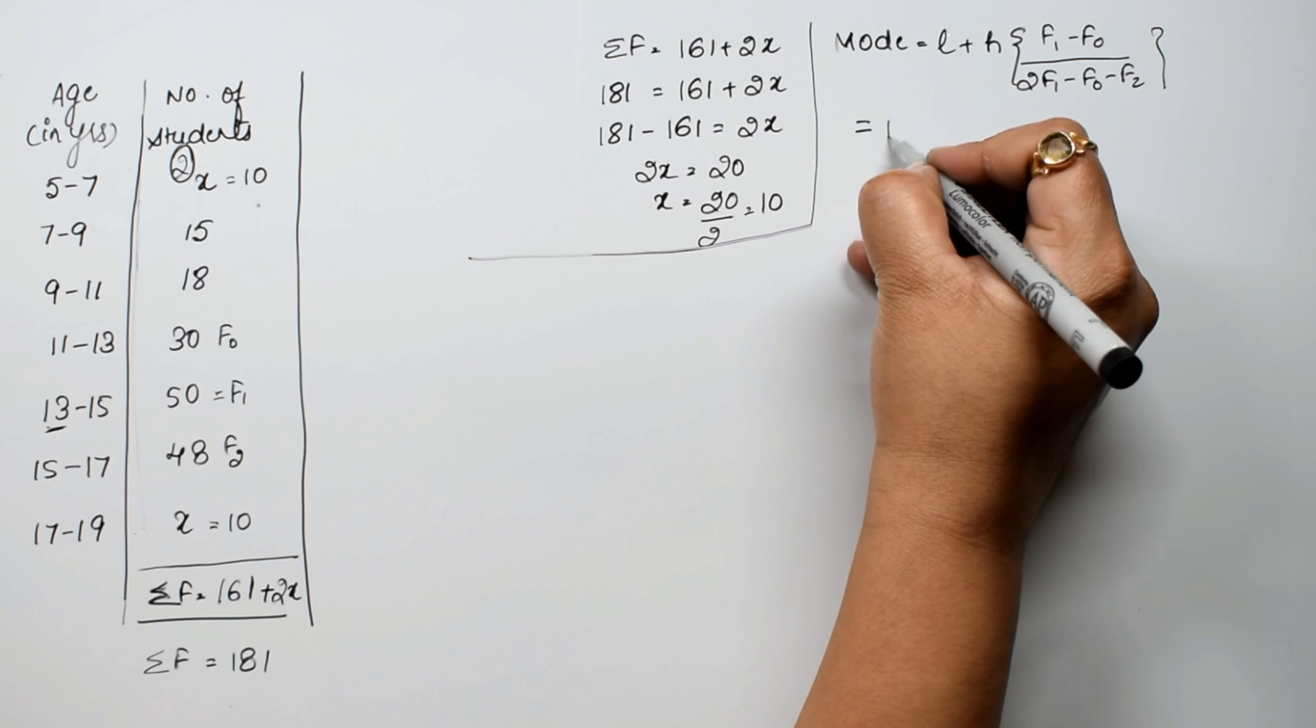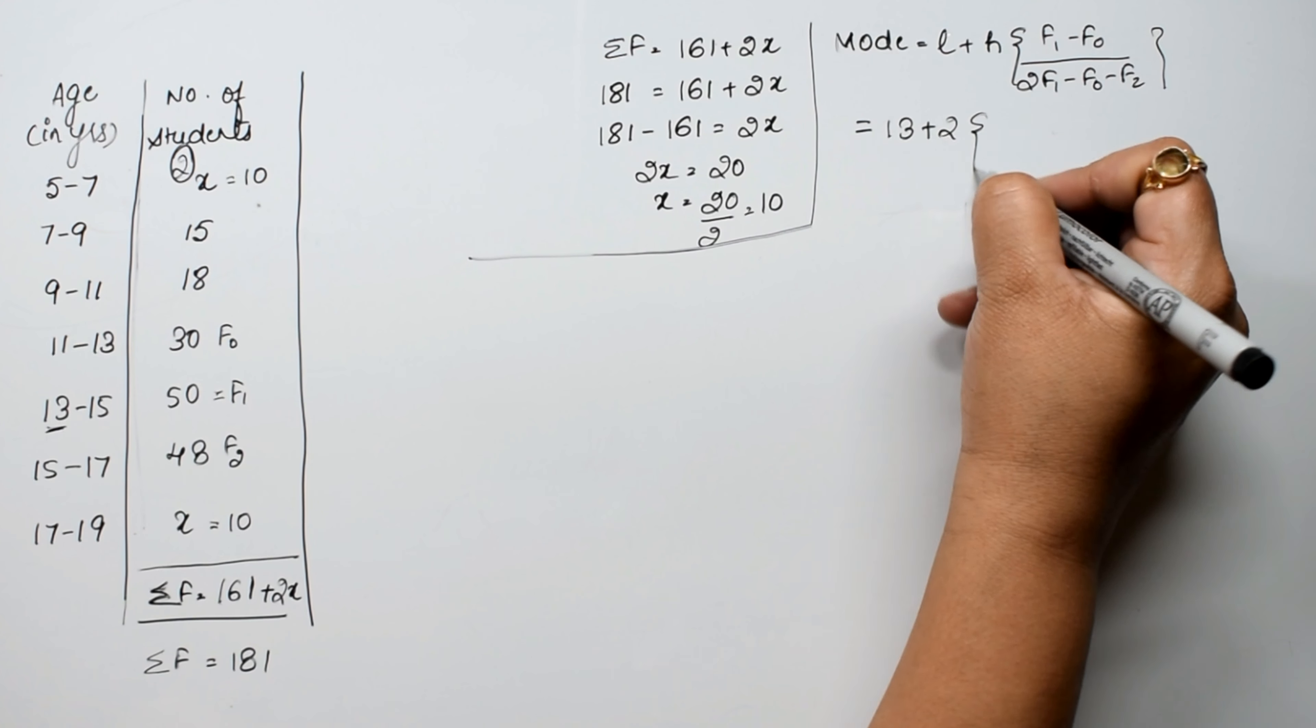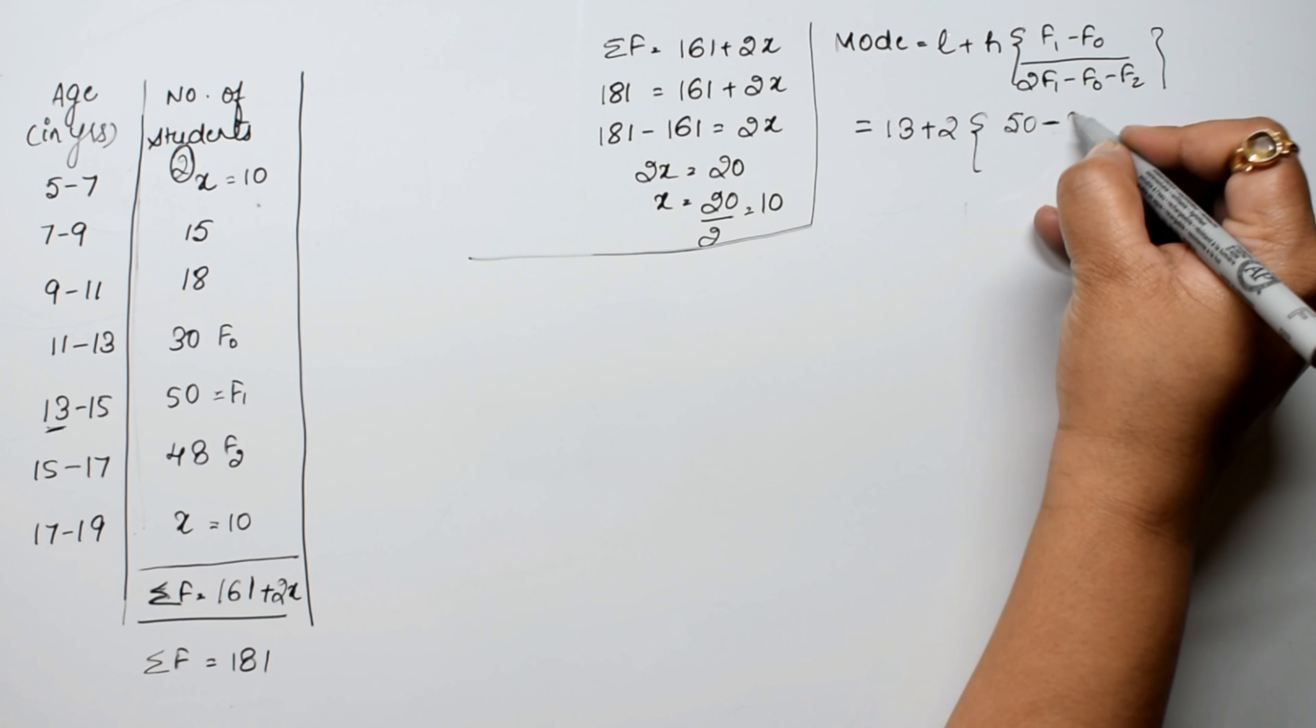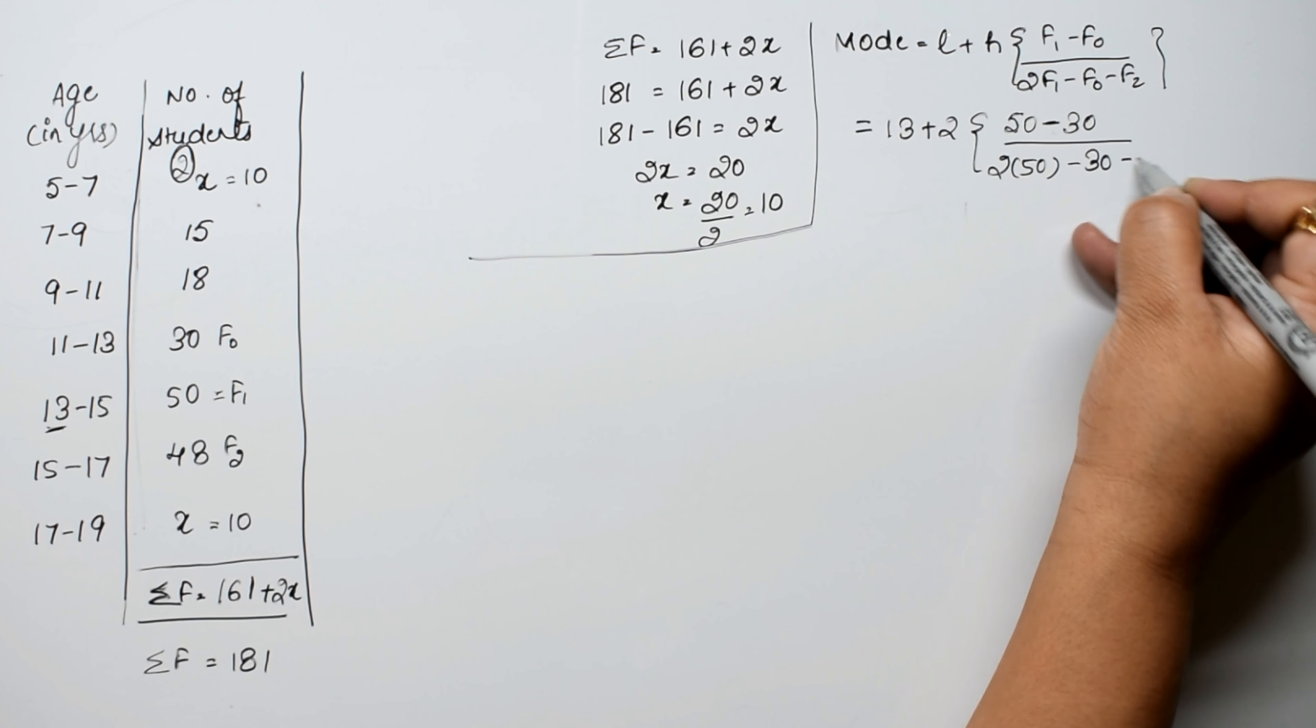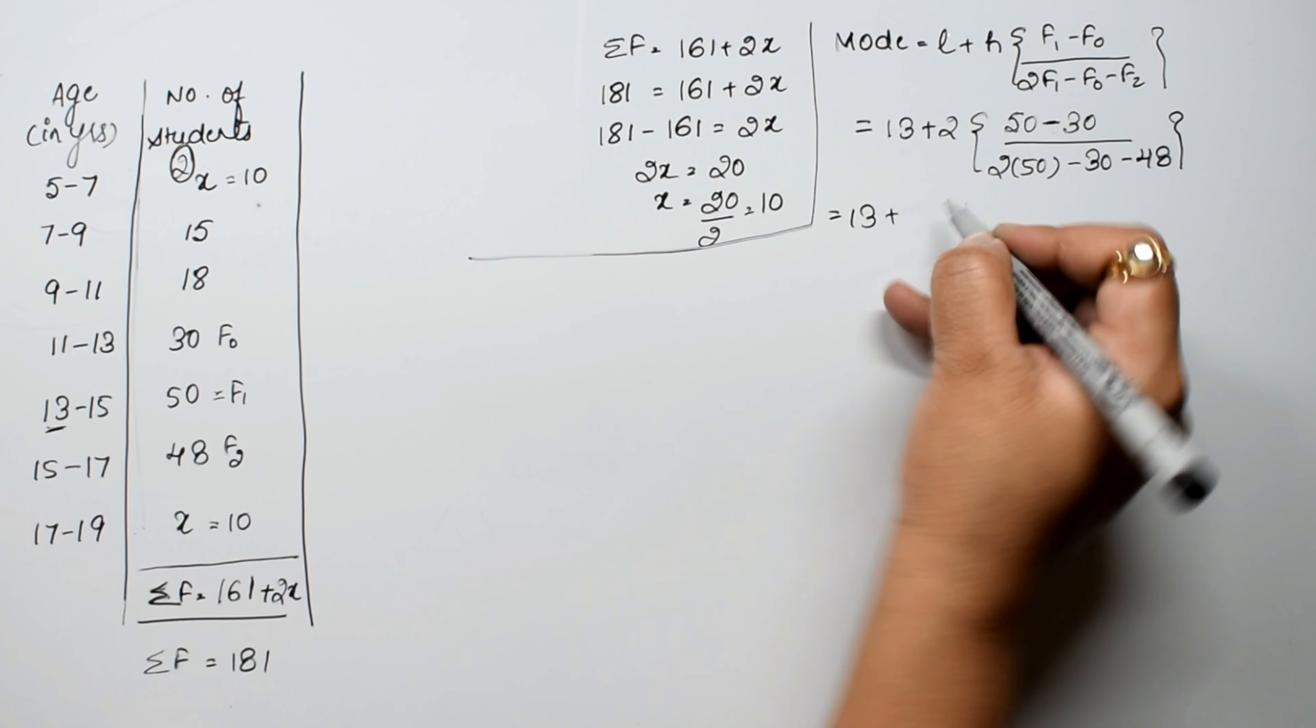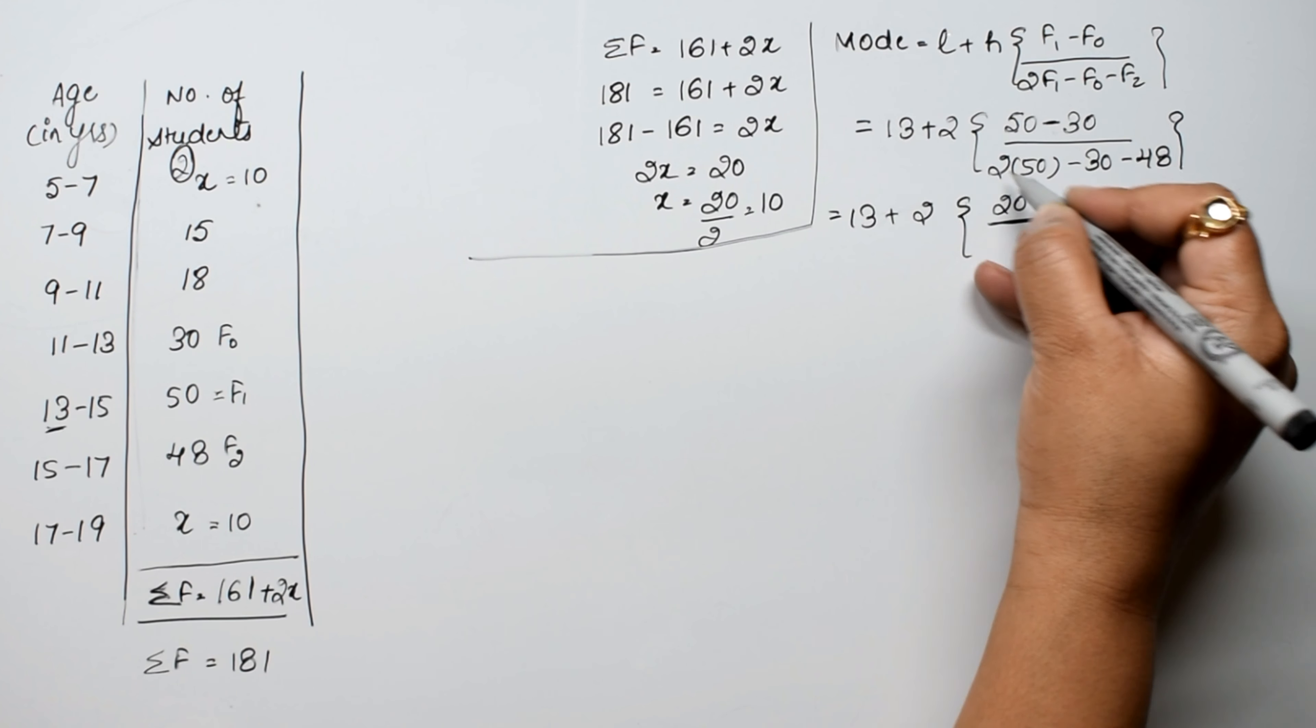So 13 plus H, the class width is 2, into f1 which is 50, minus f0 which is 30, upon twice of 50 minus 30 minus 48. Now this is 13 plus 2 into 50 minus 30 is 20 upon 2 into 50 is 100.